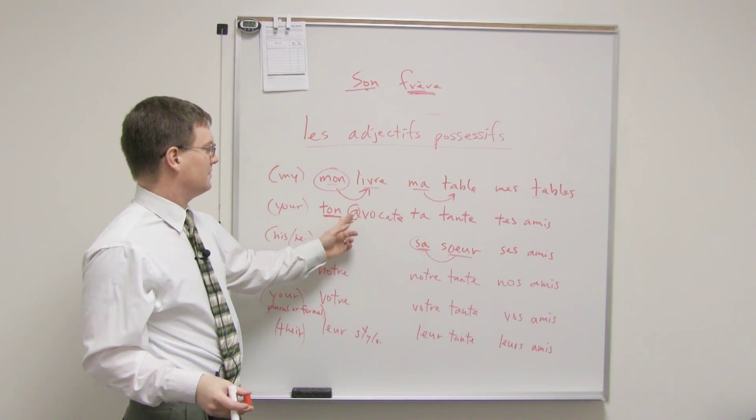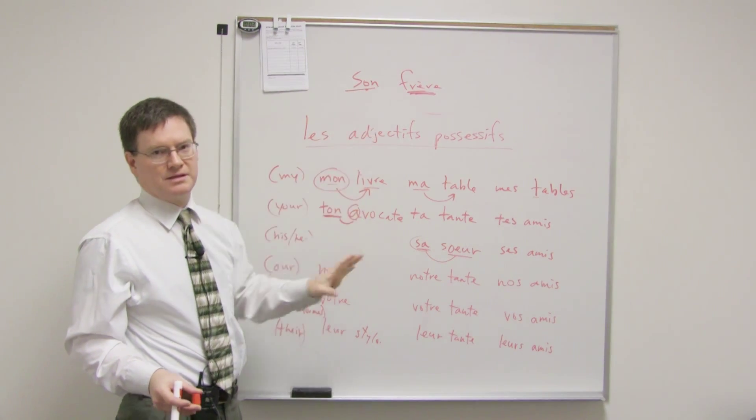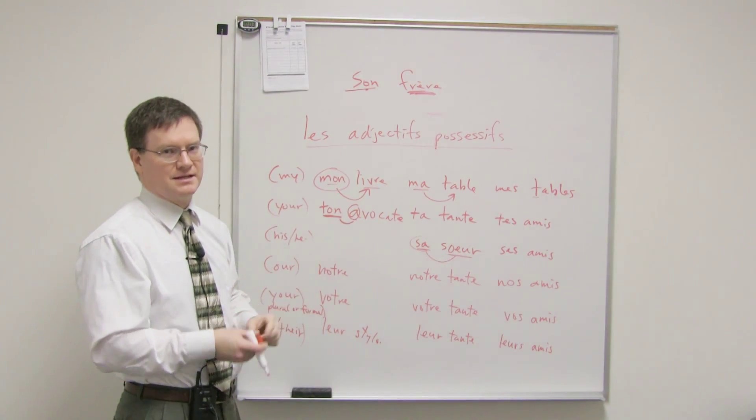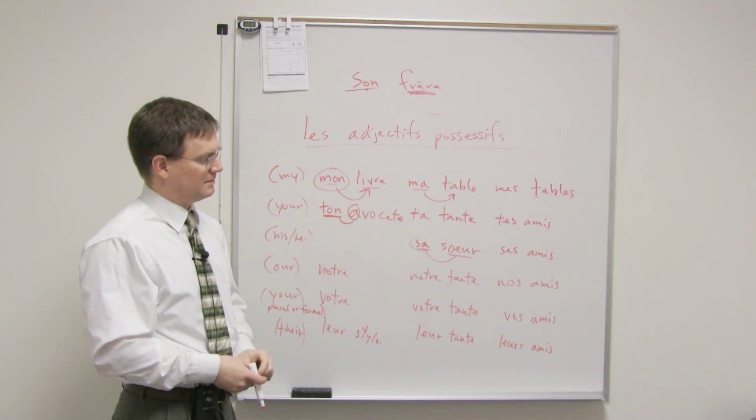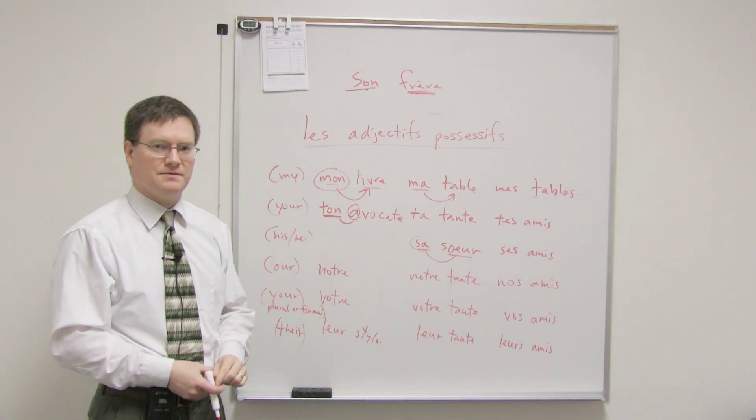Assuming there's not a vowel, it's pretty much masculine, feminine, and then plural, of course. But especially, if there is a vowel and it's feminine singular, then you'll use masculine. And the son, sa, ses thing can be a little bit tricky, so just kind of practice that a little bit. But everything else is pretty straightforward if you understand the translations. So, thank you.